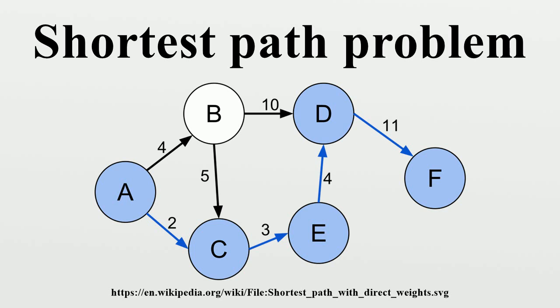The Canadian traveler problem and the stochastic shortest path problem are generalizations where either the graph isn't completely known to the mover, changes over time, or where actions are probabilistic. The shortest multiple disconnected path is a representation of the primitive path network within the framework of reptation theory. The widest path problem seeks a path so that the minimum label of any edge is as large as possible.